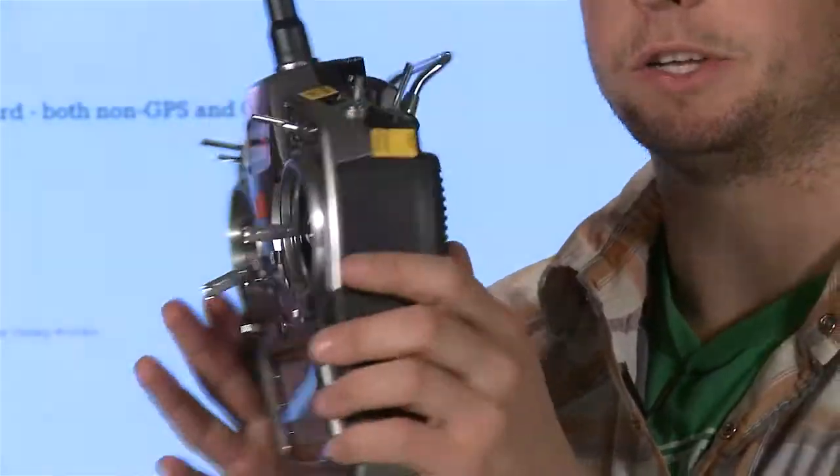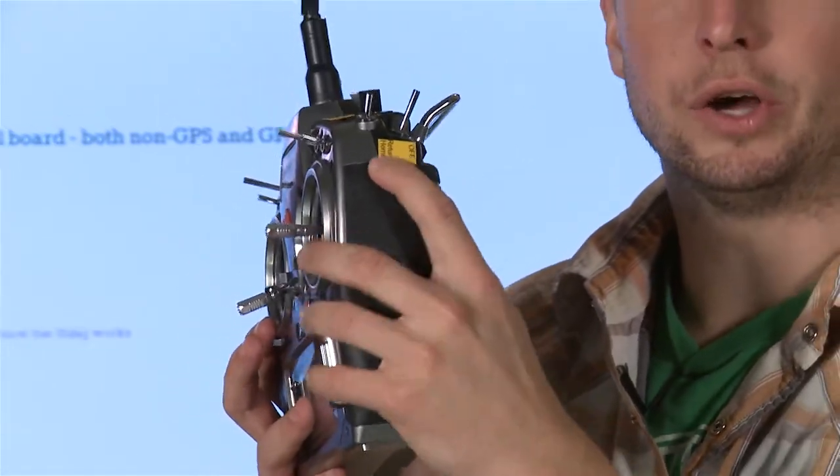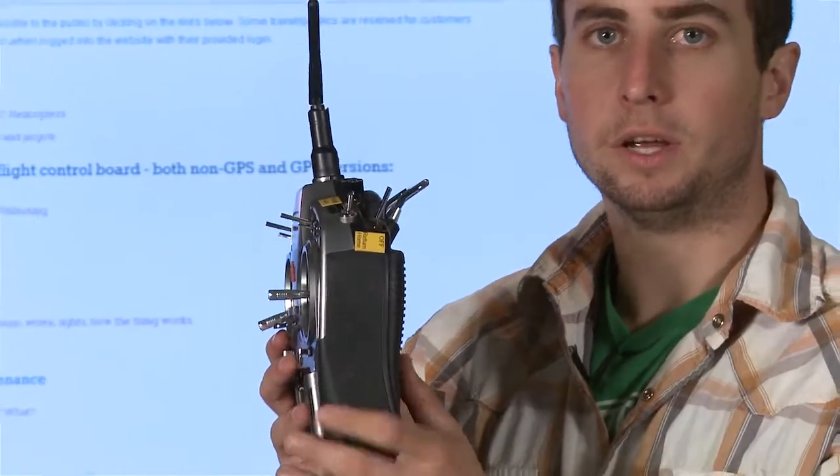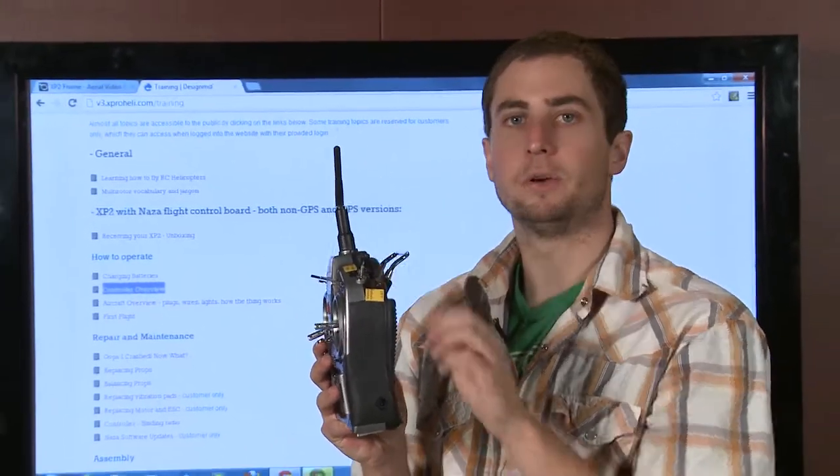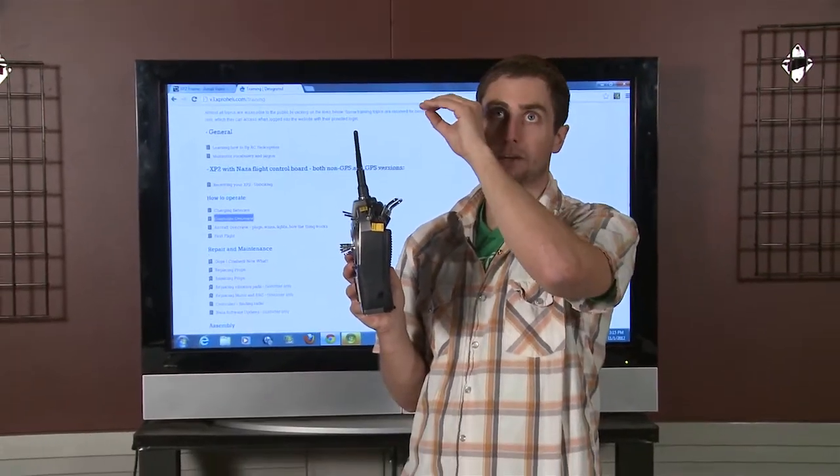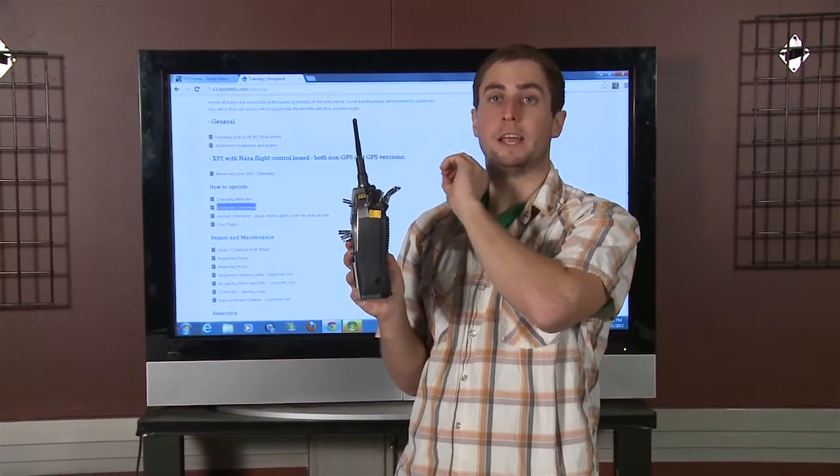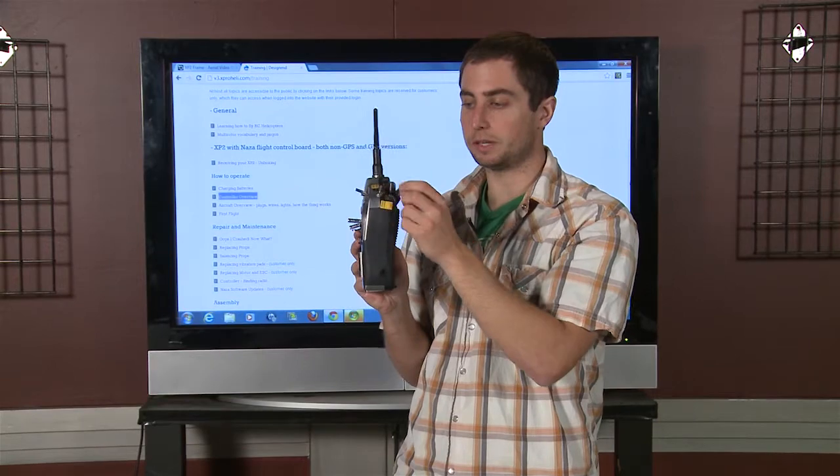And then this switch right here, this is your fail-safe switch, and this will return to home if activated. So when you're in GPS mode and you hit the fail-safe switch, what your helicopter is going to do is go up 60 feet and then try to fly back to where you first powered the helicopter on and got the GPS lock. So that's how the fail-safe switch works.